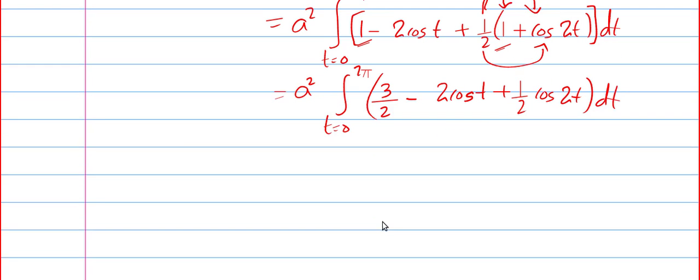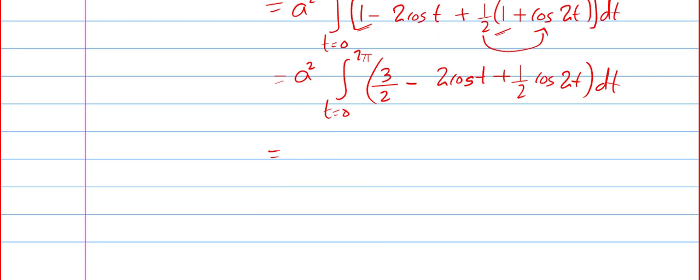Now, it's in your control. I'm sure you can do this. So, we get what is integral 3/2 dt? That will be 3/2 times t, t equal to 0 to 2π. Minus 2 times, what is the integral of cos? Yeah, positive sine.